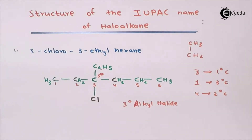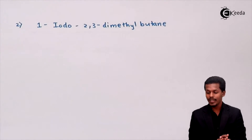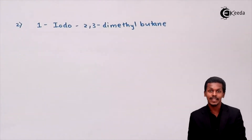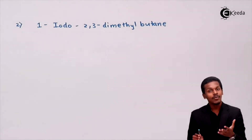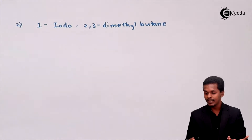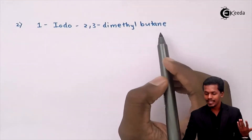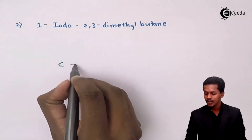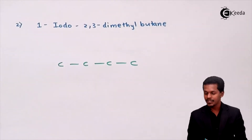Now let us move on to the second example. The second IUPAC name of the haloalkane requires us to draw the structure. The parent alkane in this case is butane, giving four carbon atoms in a straight chain: one, two, three, four.